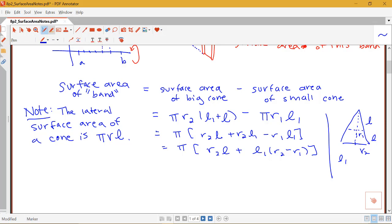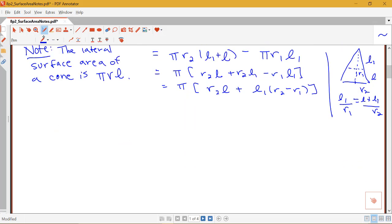So I'm going to skip a little bit of the algebra here just so we can sort of see where we're going with this. So by doing some cross-multiplying and rewriting a couple of things, I can find that L1 times R2 minus R1 is actually equal to R1L. So this is helpful because now I can take what I have here and rewrite this as R2L plus R1L.